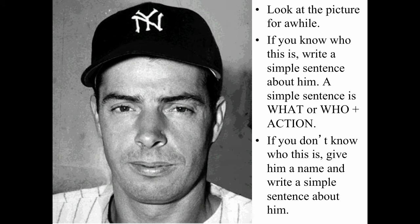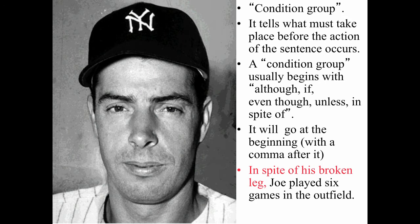Step one: look at this person and write a simple, boring sentence about him. Give him a name and have him do something. The name is the who or the what, and the action is the thing he does. If you don't know his name, just make one up. Once you have a simple sentence about him, we can add to it to make it more interesting. We're going to add a condition group — a group of words that comes at the beginning and tells what needs to happen before the rest of the sentence takes place. It makes your sentence a lot more interesting and adds a lot more detail.